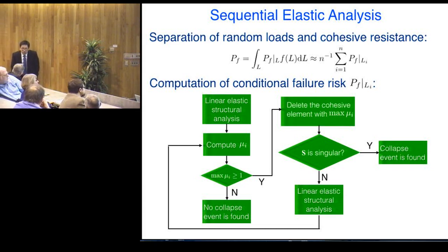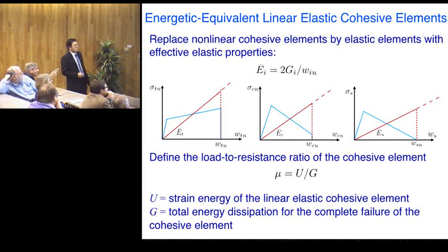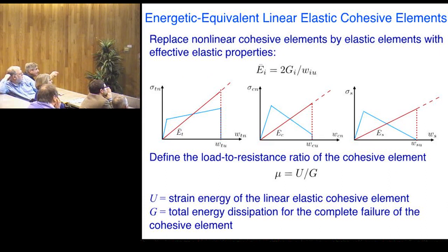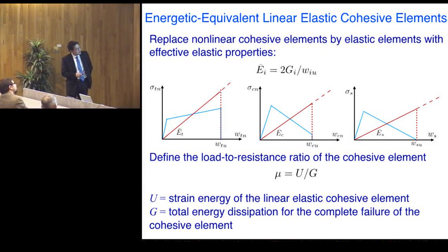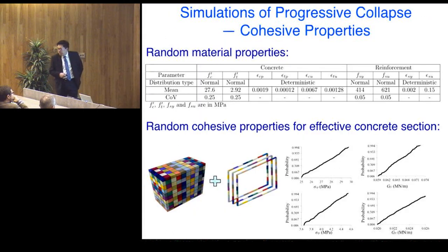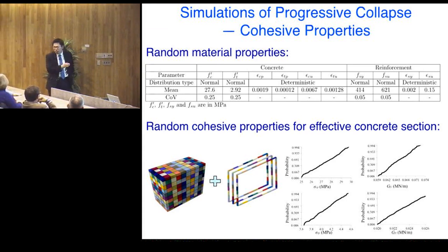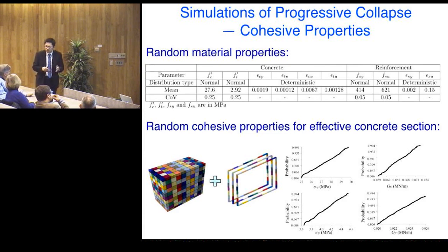Very elegant, but my question is: how do you compute EC and WC — the energetic equivalence parameters? EC is computed from the area under the blue curve, which is the actual nonlinear cohesive behavior determined from the two-scale lower-scale simulations. So you do have to run the two-scale model first, and then every element will have a different value of GC and WC depending on its geometry and material properties. Yes, that's correct — it is case-dependent.